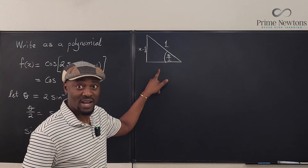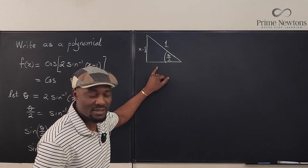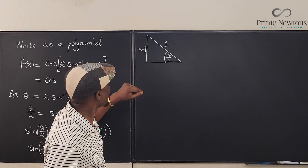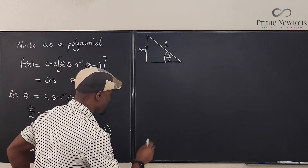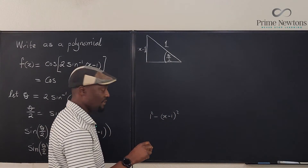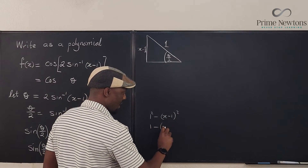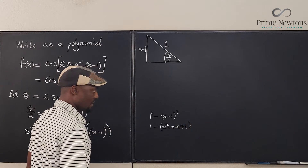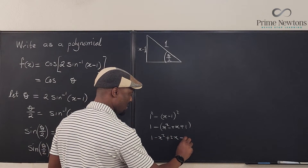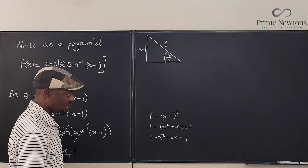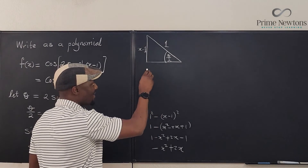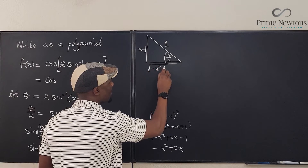So I need to find the third side — the missing side. By the Pythagorean theorem, I can say it is the square root of the square of the hypotenuse minus the square of the opposite. That's going to be 1 squared minus (X minus 1) squared. Expanding: 1 minus (X squared minus 2X plus 1), which gives 1 minus X squared plus 2X minus 1. That's just negative X squared plus 2X. So this side is the square root of negative X squared plus 2X.